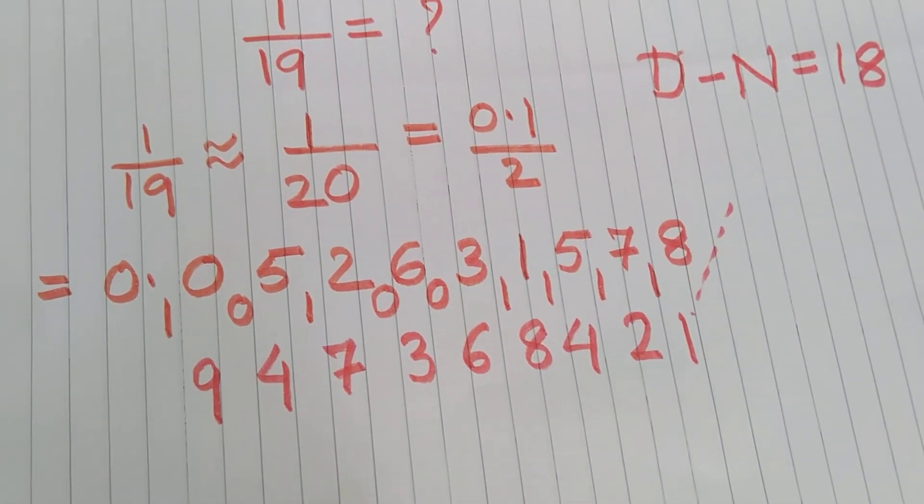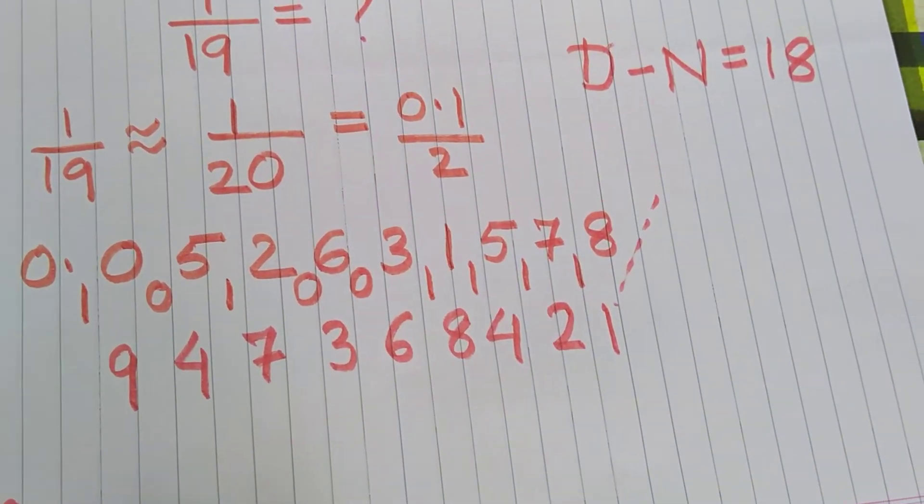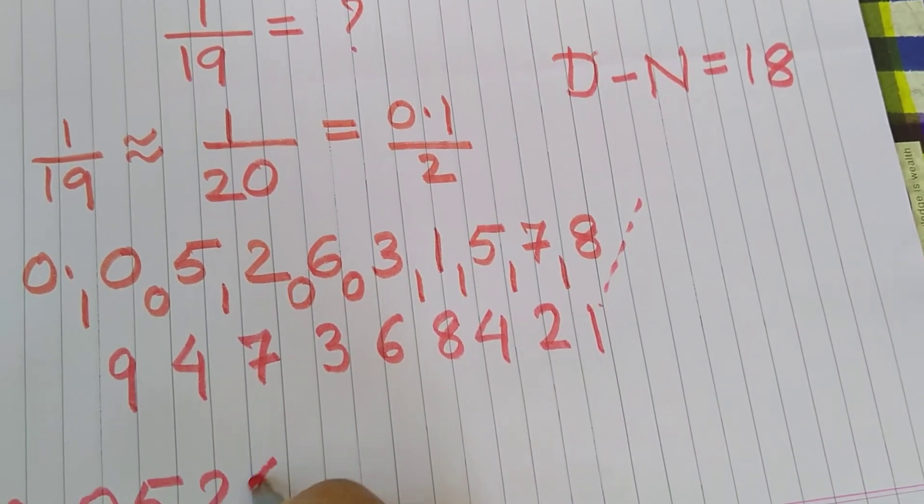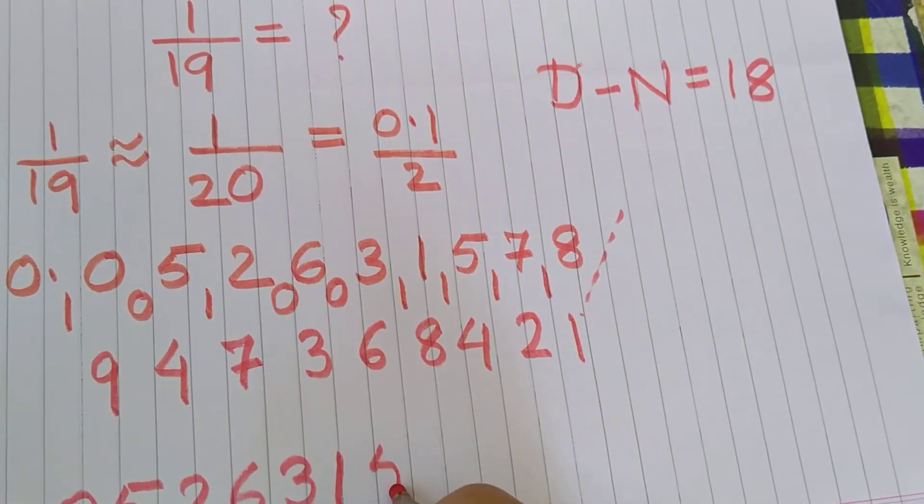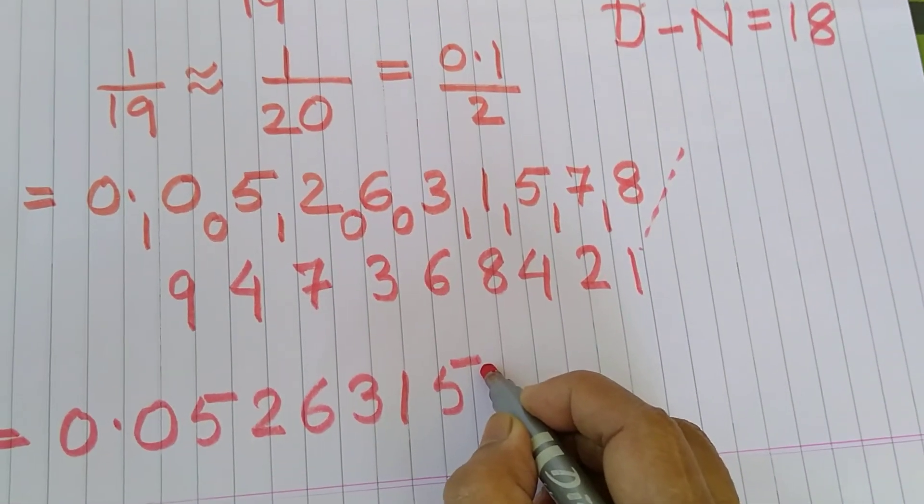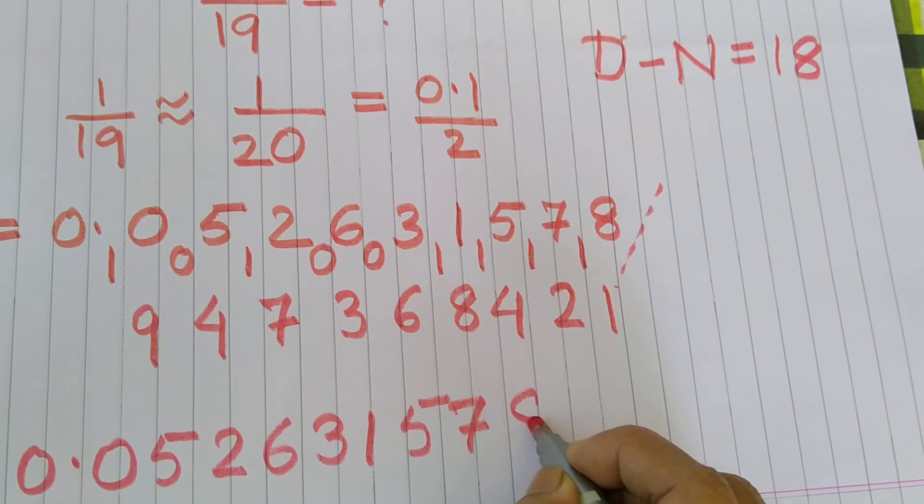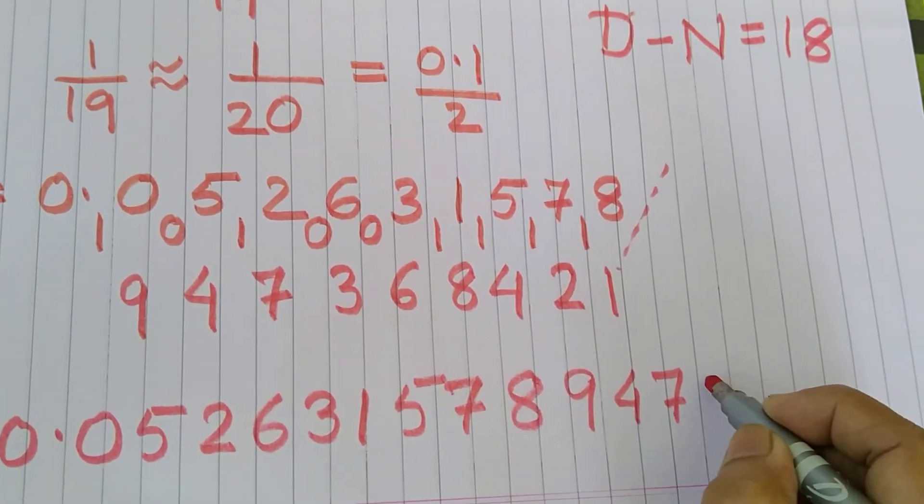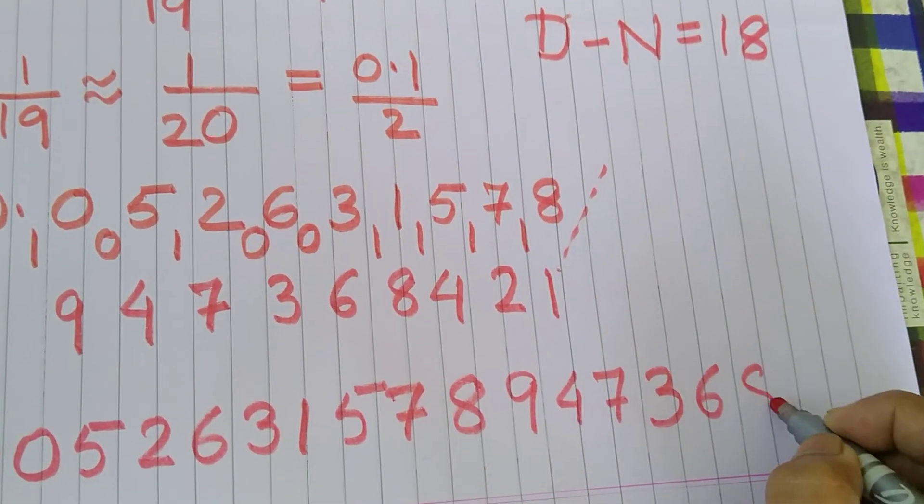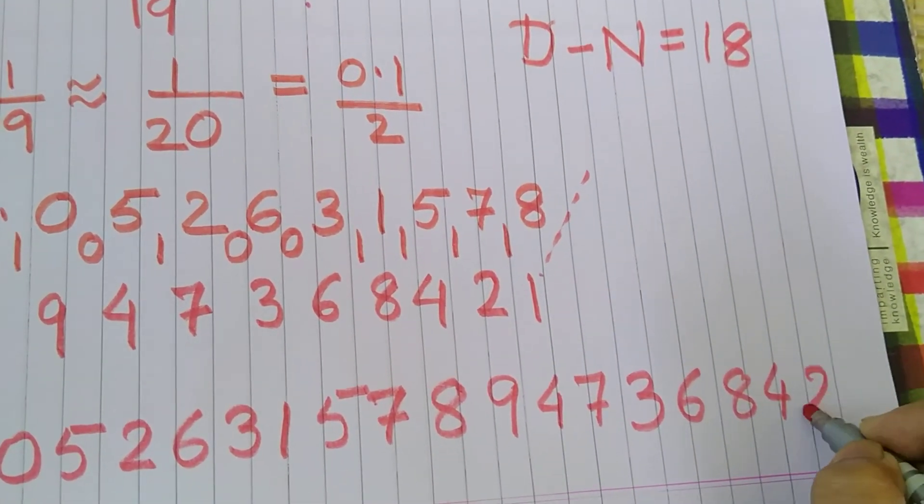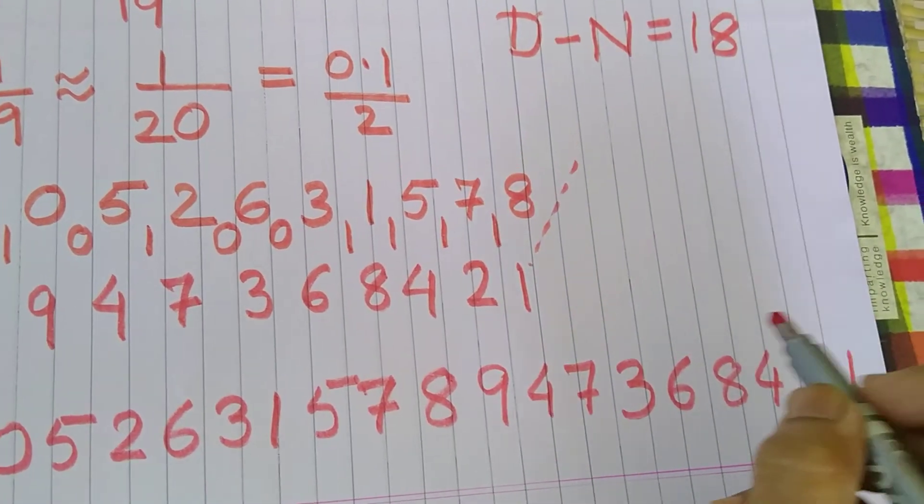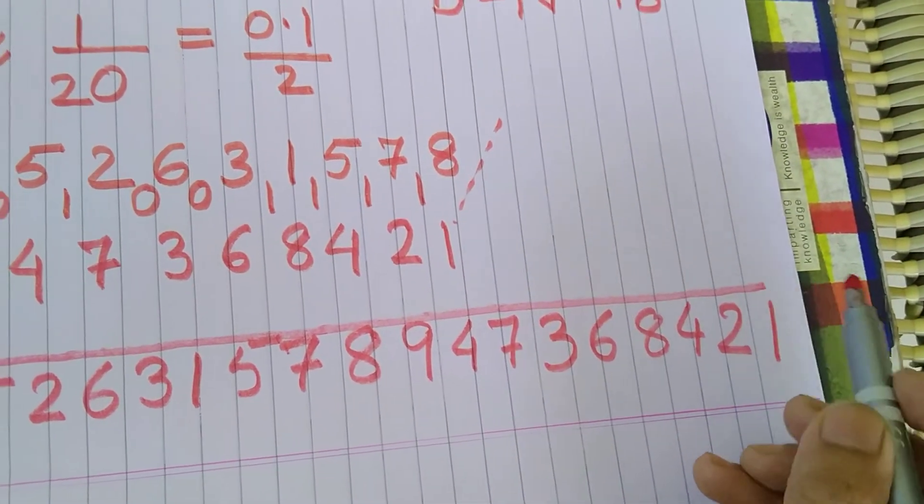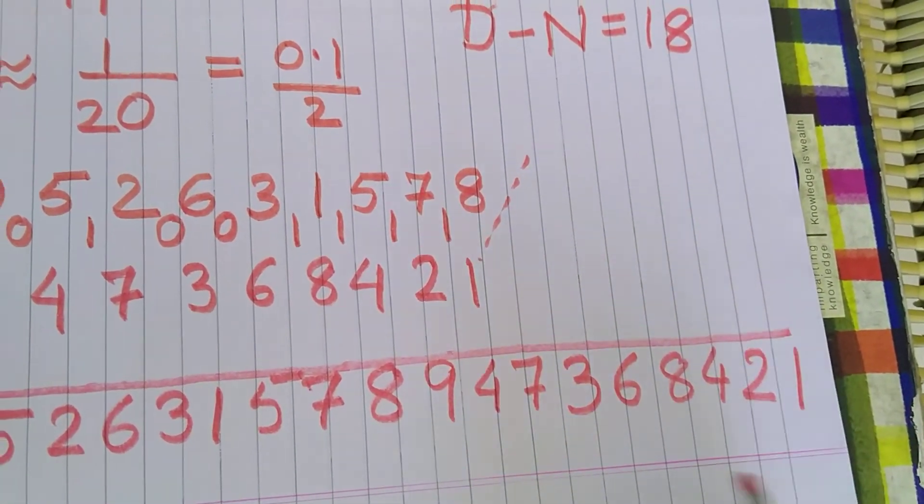We write the other number and add this to it. So 0. 5. 2. 6. 3. 1. 5. 7. 8. And then 9. 4. 7. 3. 6. 8. 4. 2. 1.